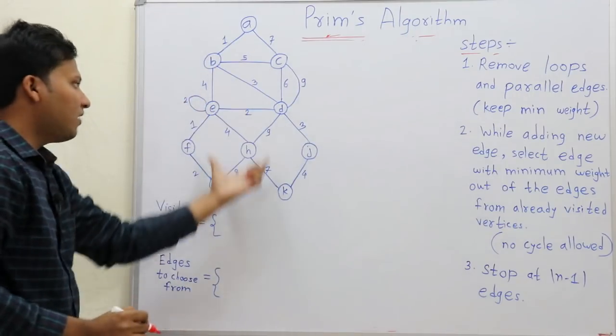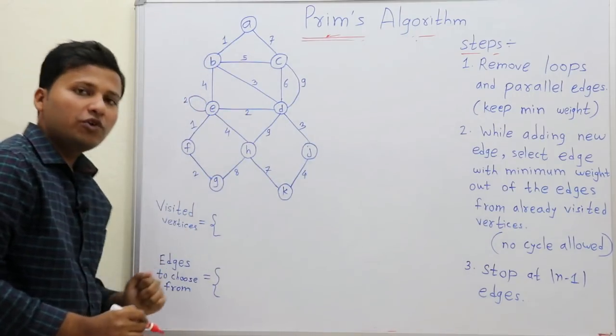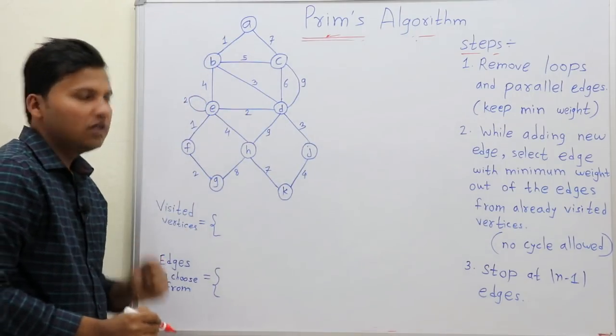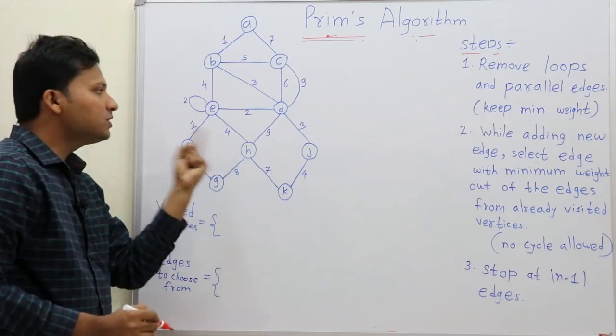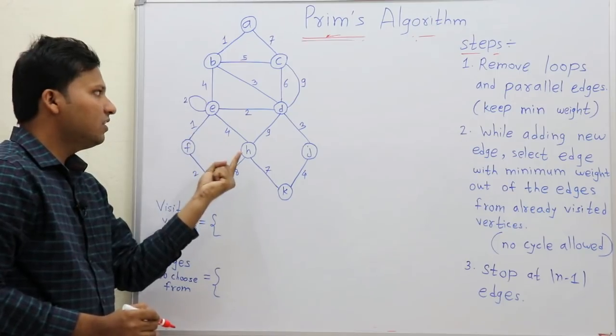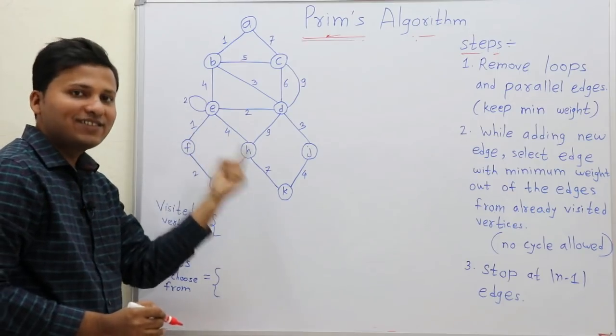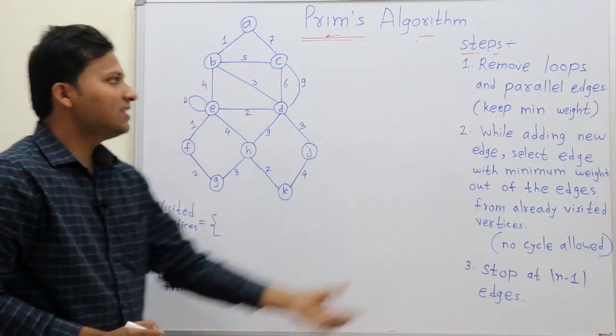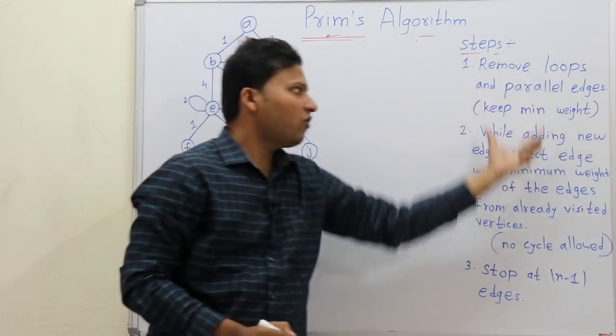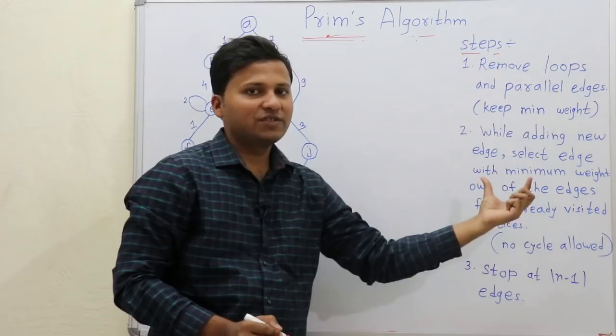So this is the graph and we want to find out the minimum spanning tree from this graph. So these are the steps for this algorithm.